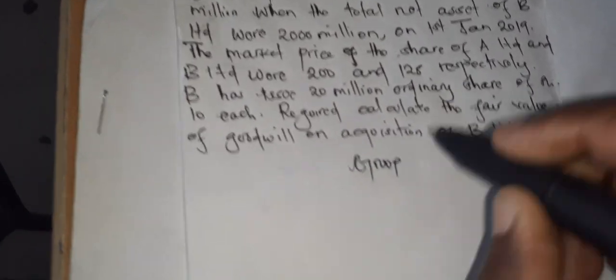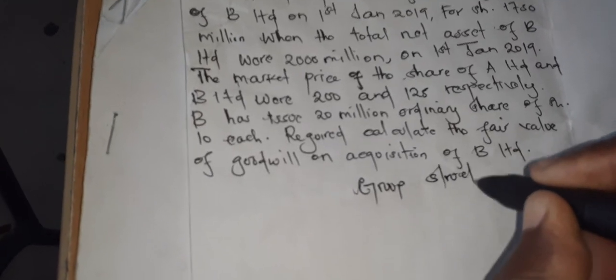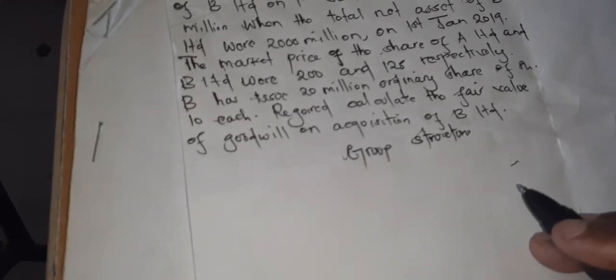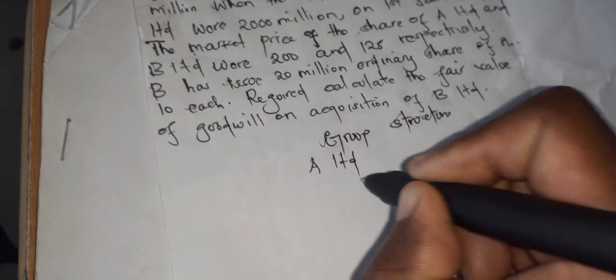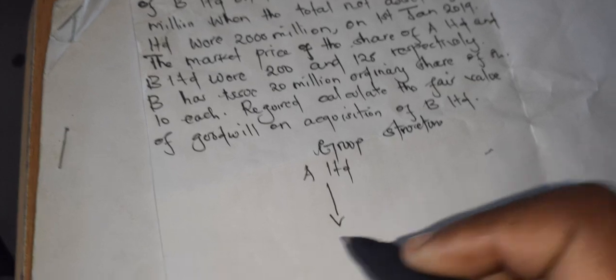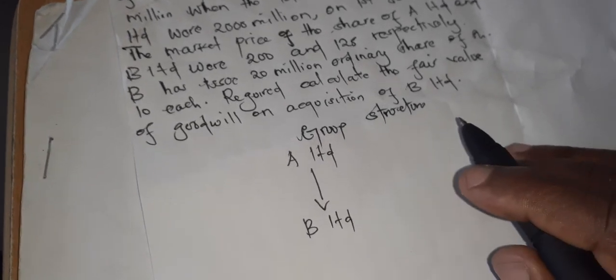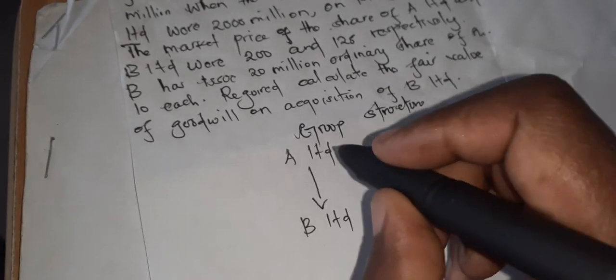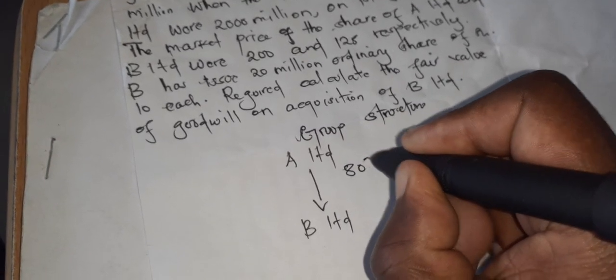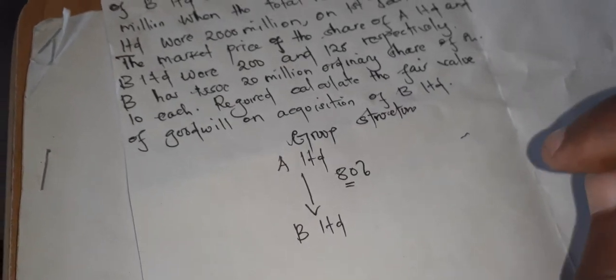So for group structure, our parent company being here is A Limited. So A Limited acquire 80% of the B Limited. So A Limited acquire 80% of the ordinary shares of B Limited.